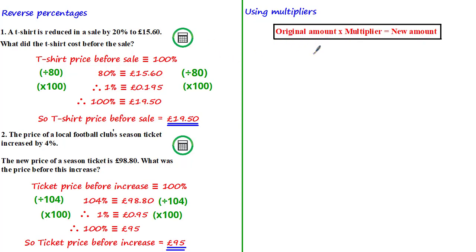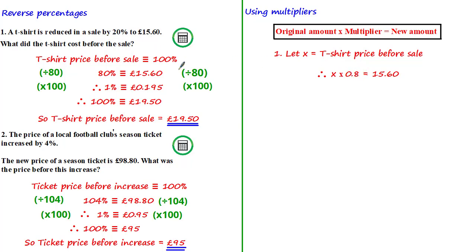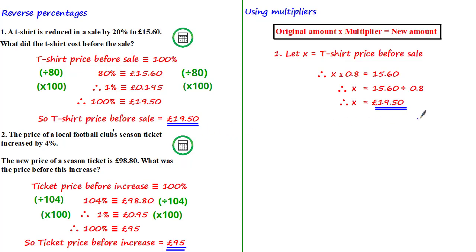For example, in the first question, if we let x equal the t-shirt price before the sale, then using the above equation: x times by 0.8 — which is the equivalent multiplier for a 20% reduction — should equal 15.60, which is the new amount after the percentage decrease was applied to x. To find x we simply divide both sides by 0.8, giving us x equals £19.50, which is the same as before.